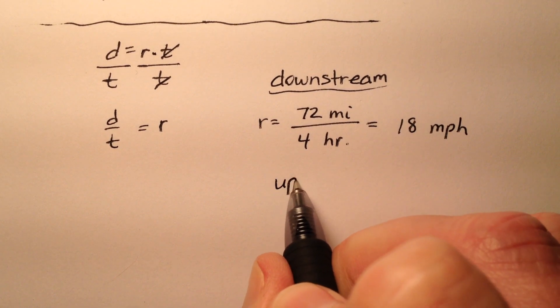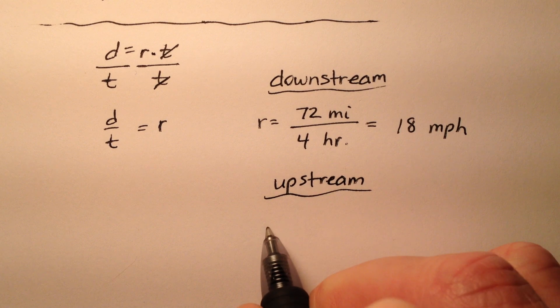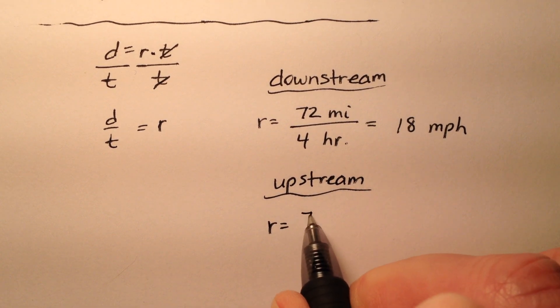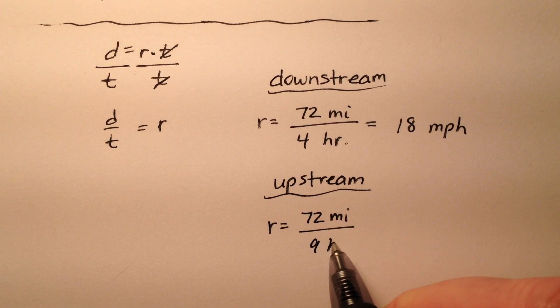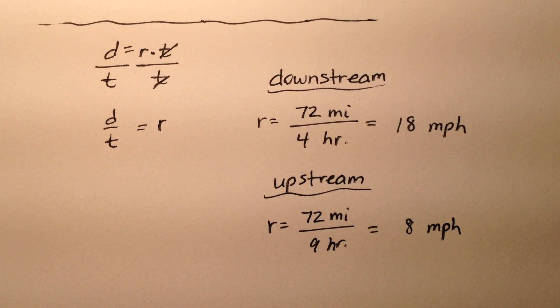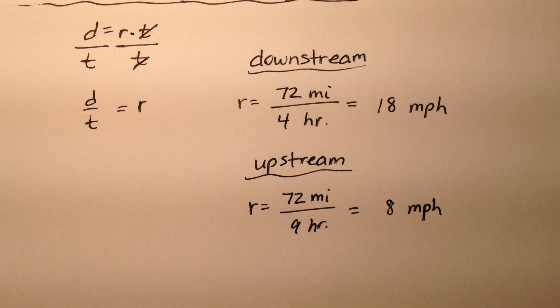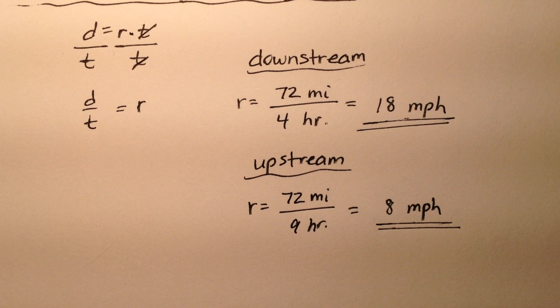How about upstream, what was our average speed? Well, the rate is going to be those same 72 miles, but this time divided by 9 hours, which is going to give us an 8 mile per hour rate. So we needed to have this information to really get going to write our systems.